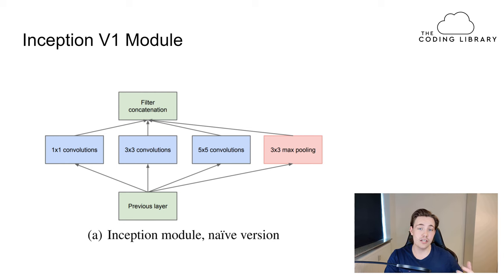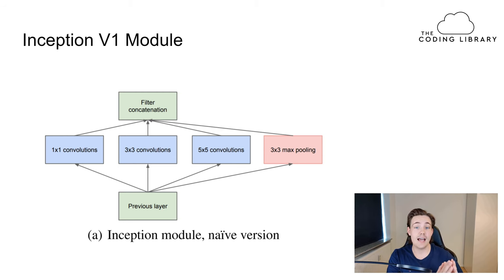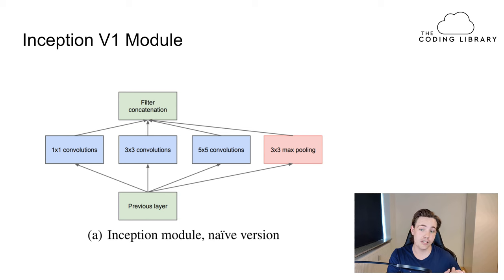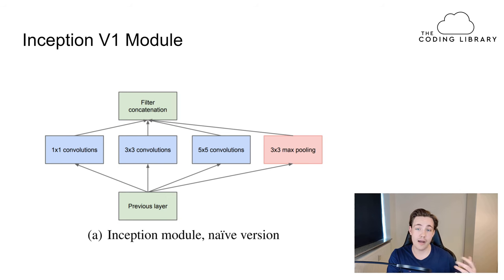Here is an easy example of the Inception version 1 module, where we have input from a previous layer feeding into this Inception module. In previous approaches — ResNet or traditional convolutional layers — we only do one operation per layer: either a 3x3 convolution, a 5x5 convolution, or a max pooling layer. Only one specific operation or transformation per convolutional layer.